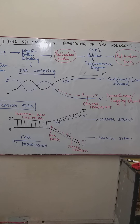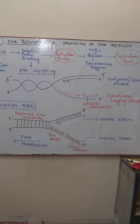So the coiling is prevented. The stabilizing of these single strands and the breaking of hydrogen bonds are all brought about with the help of three types of special enzymes: SSBs, helicases, and topoisomerase enzyme.